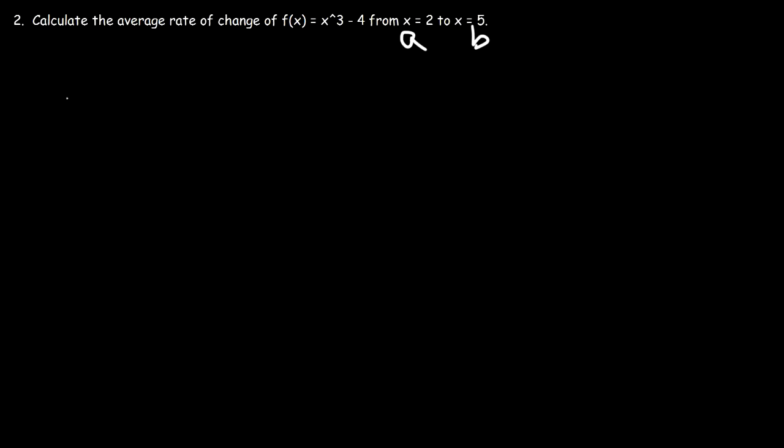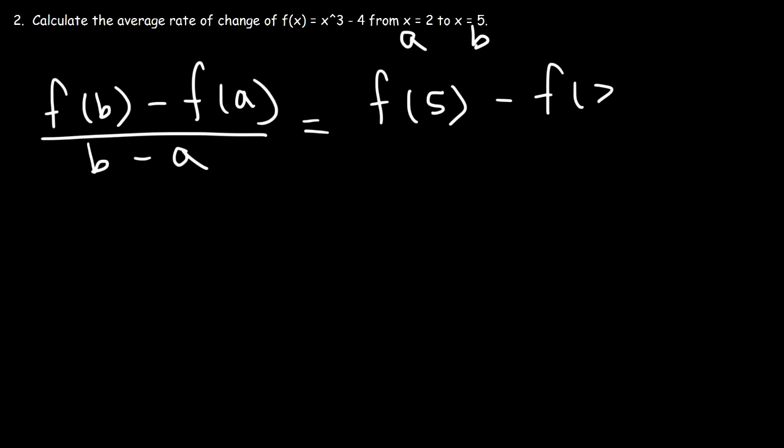a is 2, b is 5. So it's f(b) minus f(a) over b minus a. That's the average rate of change. So this is going to be f(5) minus f(2) divided by 5 minus 2.